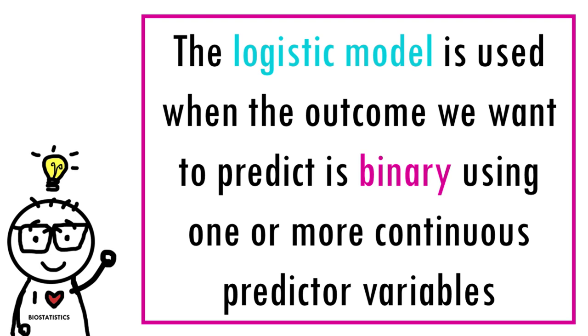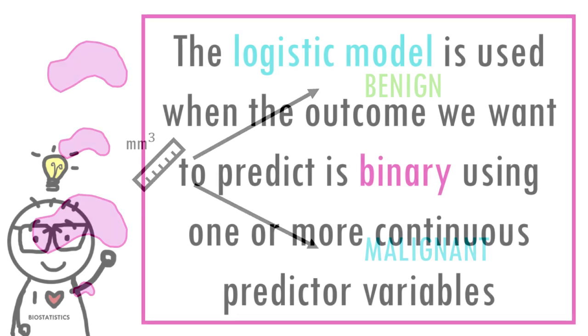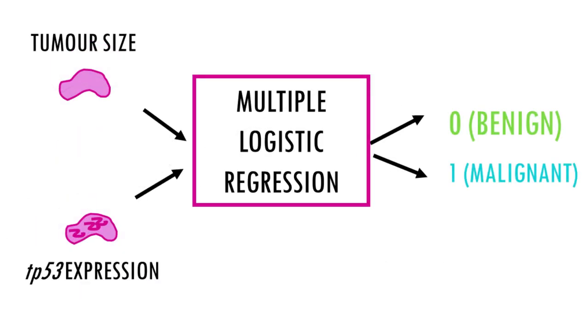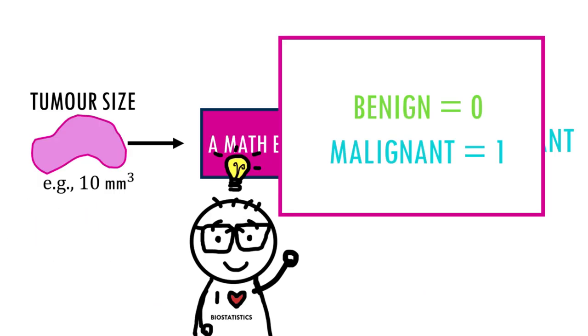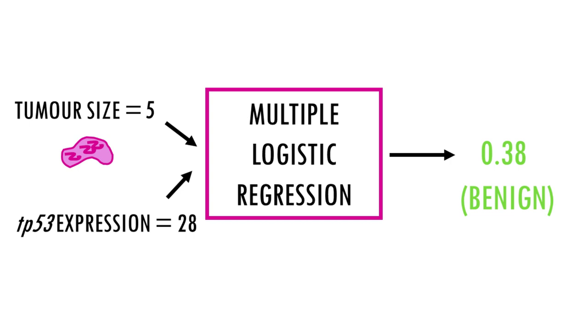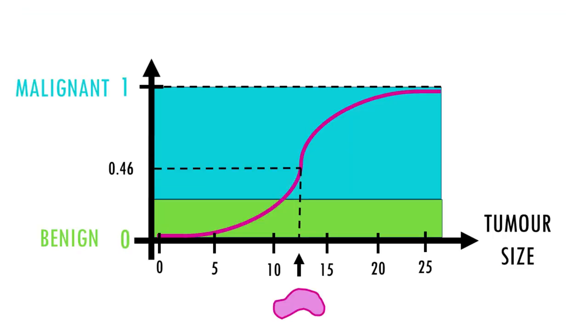Nice! So, in summary, logistic regression is a statistical method that is used when we have a binary outcome variable and one or more predictor variables. If you're interested in the math, I would highly recommend the video by Josh Starmer, which goes a bit more into the math behind logistic regression. I'll leave the link in the description below.